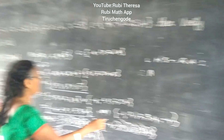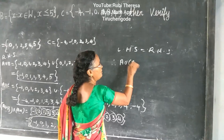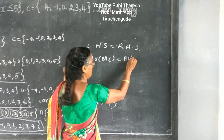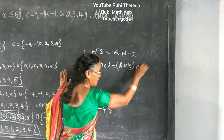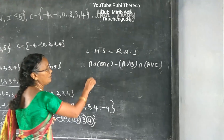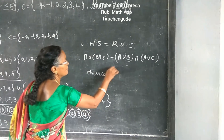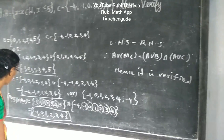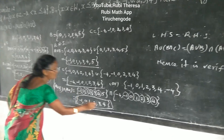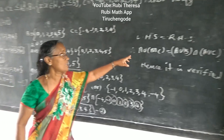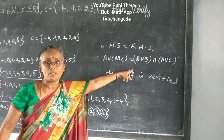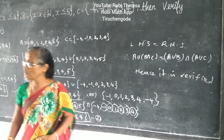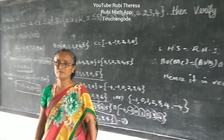I told you LHS is equal to RHS — just compare both answers, whether both are the same. So LHS is equal to RHS. Therefore, the distributive property A union (B intersection C) = (A union B) intersection (A union C) is verified.